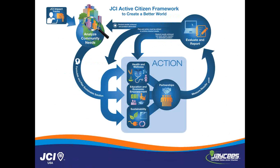The first step in using the Active Citizen Framework is to analyze community needs, followed by looking for sustainable solutions and root causes to those problems. Once we've formulated a solution, we take action, build partners, and then measure our results to see if we've made an impact and how we should continue moving forward. It's a continuous circle — we're always looking for new projects and new challenges to tackle, so our chapters are always doing something and never becoming stale.